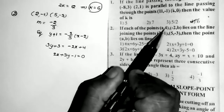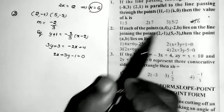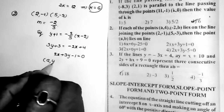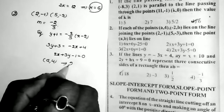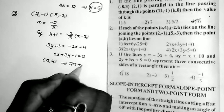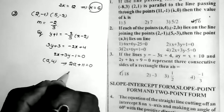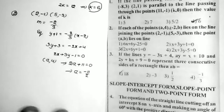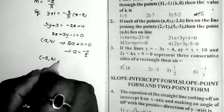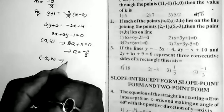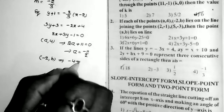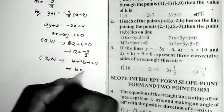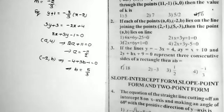The points (a, 4) and (−2, b) lie on this line 2x + 3y − 1 = 0. Replacing (a, 4): 2a + 12 − 1 = 0, giving 2a + 11 = 0, so a = −11/2. Next, replacing (−2, b): −4 + 3b − 1 = 0, giving 3b = 5, so b = 5/3.